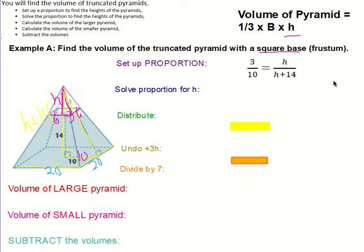I'm going to cross-multiply. I'm going to take 10 times h and 3 times the quantity h plus 14. 10h equals 3 times h plus 14. I have parentheses, so I have to distribute. I'm going to take that 3 and multiply it by both the h and the 14. 10h equals 3h plus 42.